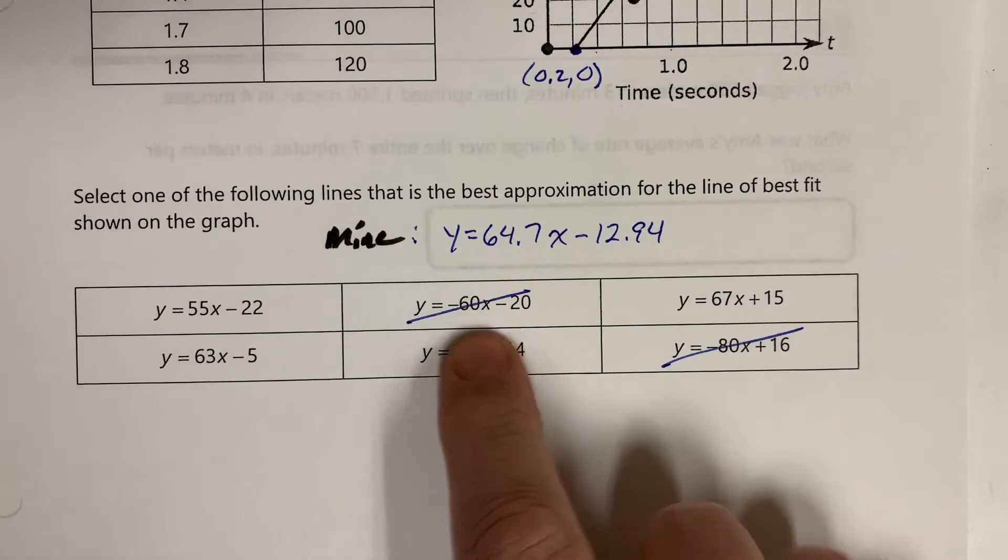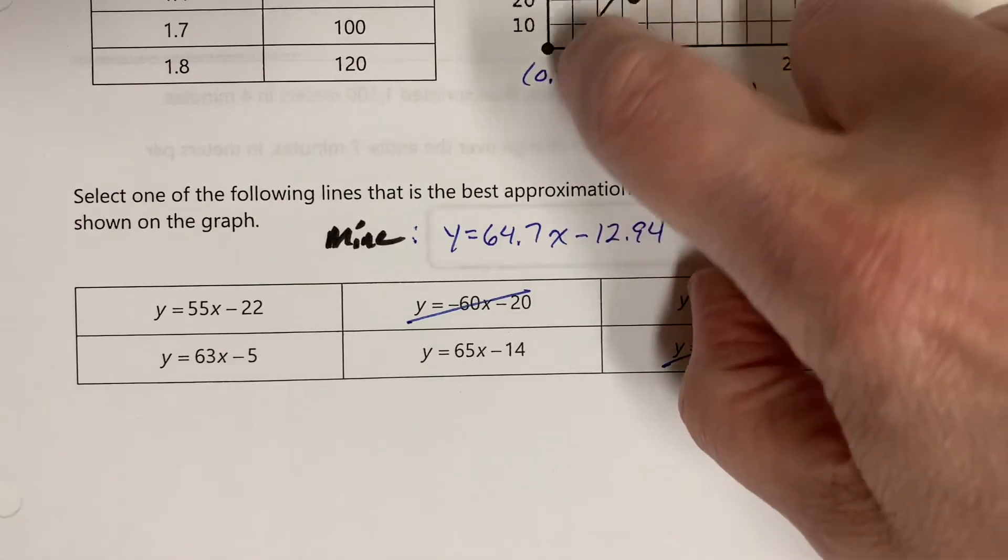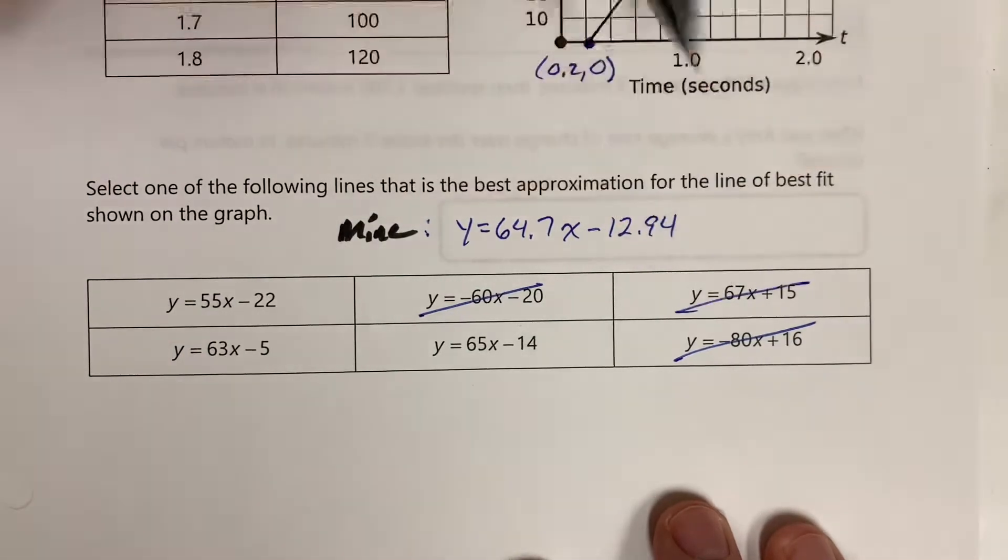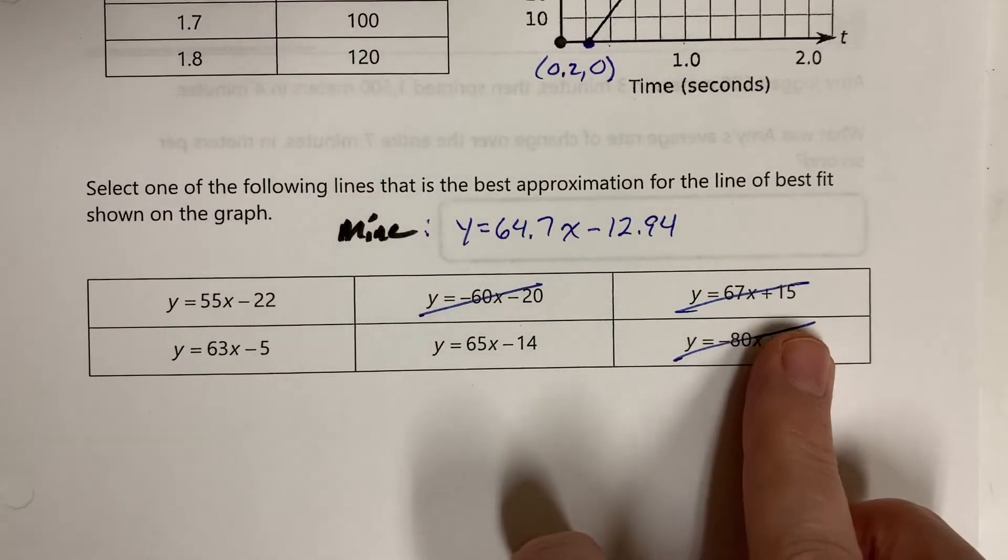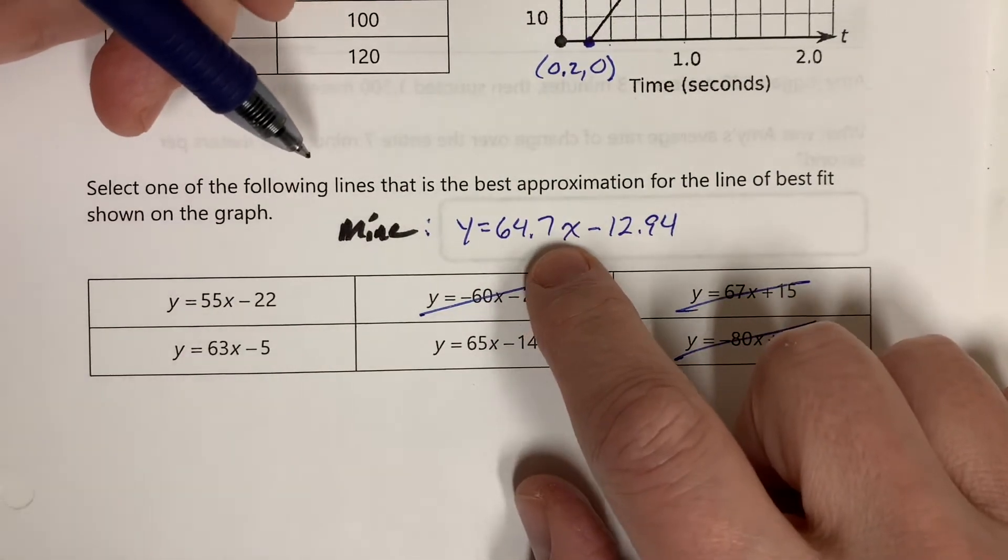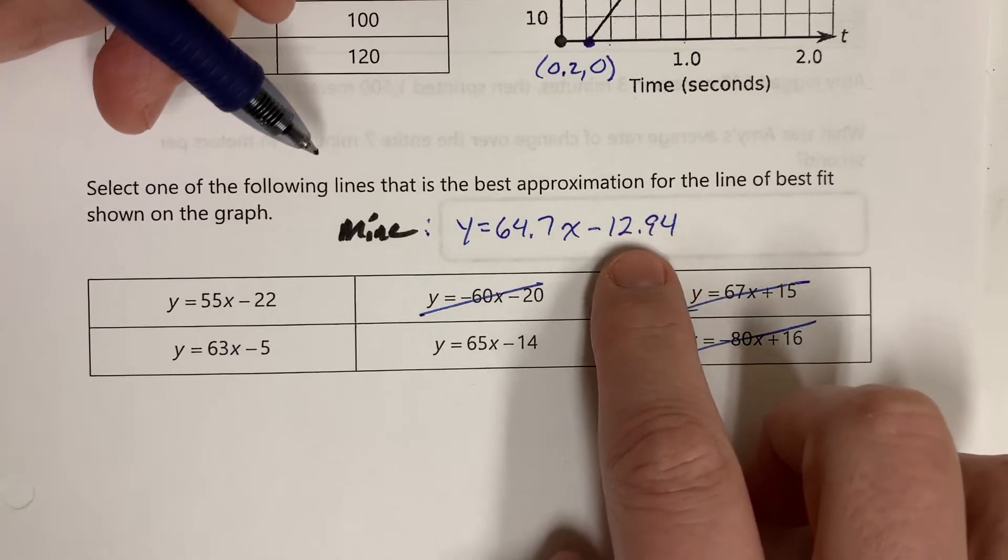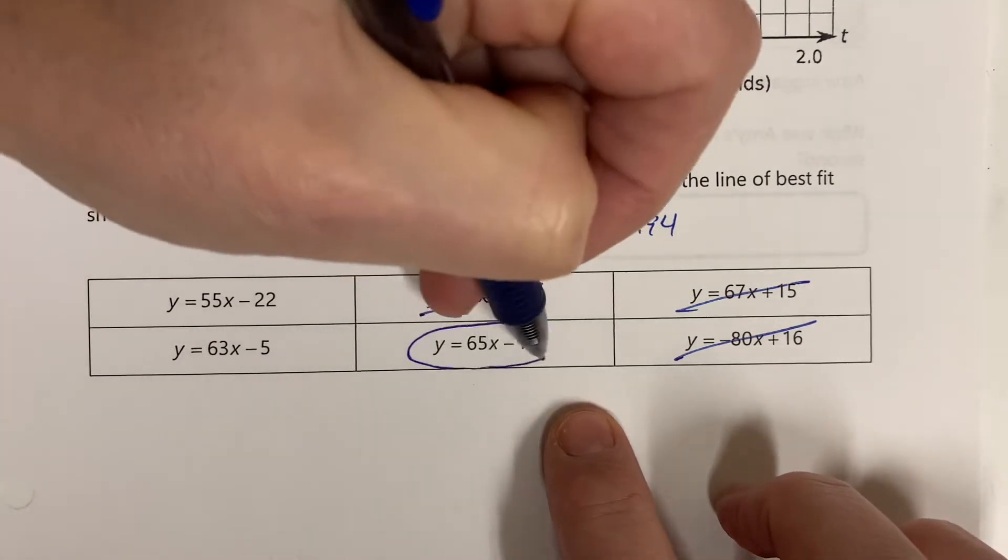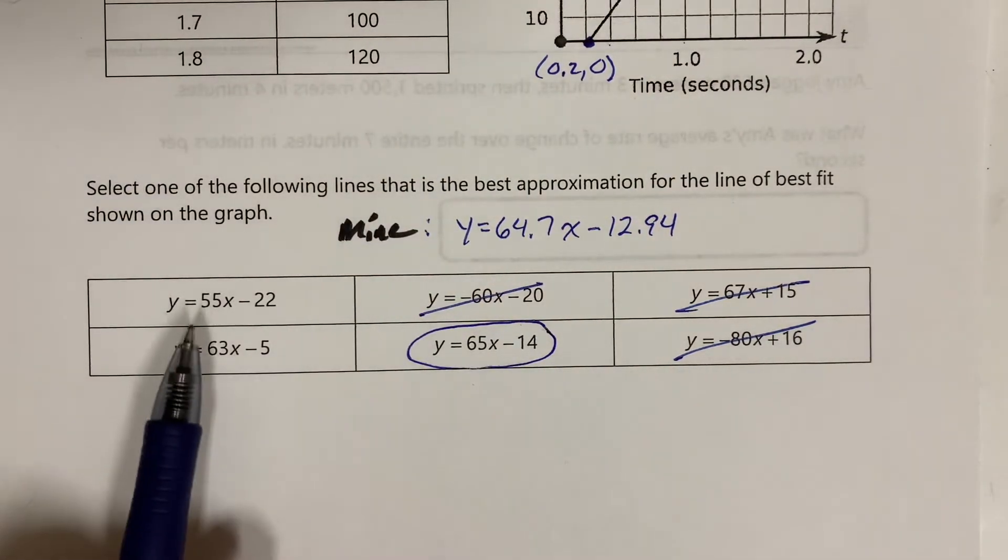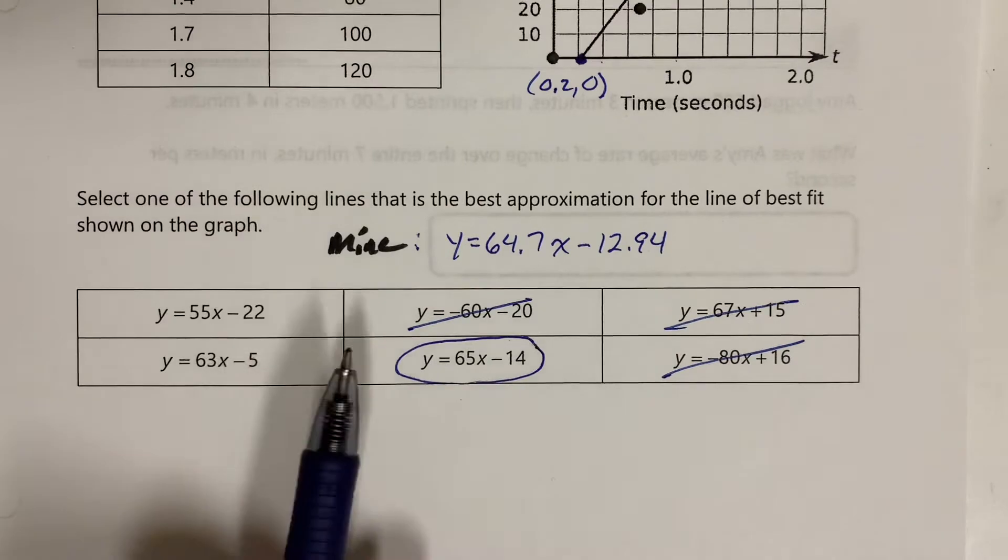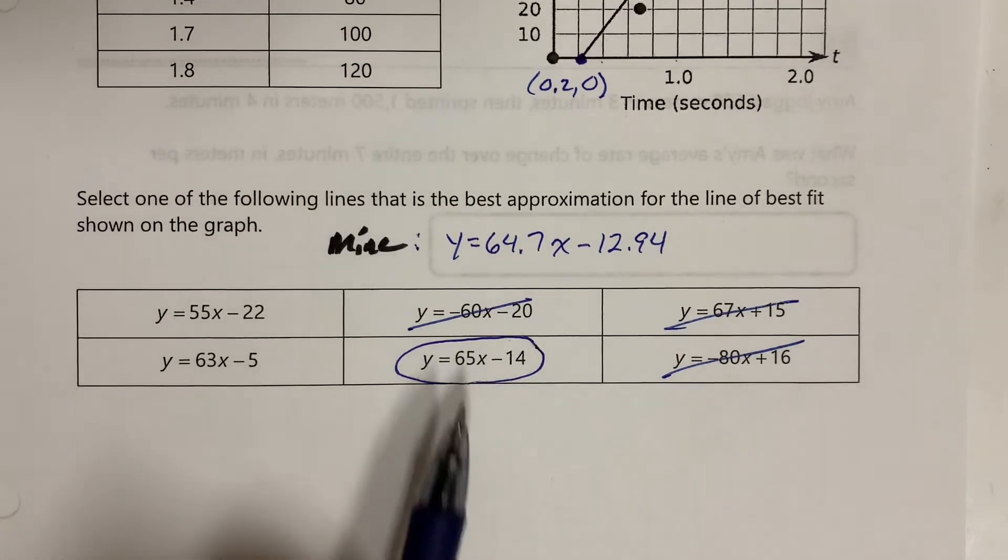Also, the y-intercept if it keeps going down like this, just from looking at it, is going to be negative. So any y-intercept that's positive can be thrown out. Now we're down to these three, and of these three, I need a 64.7 slope that's pretty close to 65. Negative 12.94 is pretty close to 14, and so I'm going to choose this one as being my best answer. This one is actually the one that matches up a whole lot better.